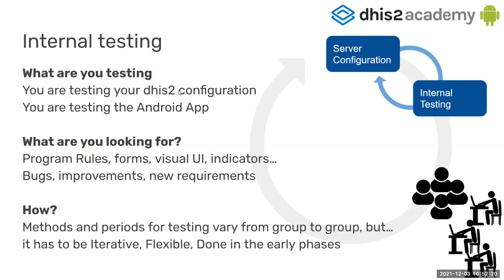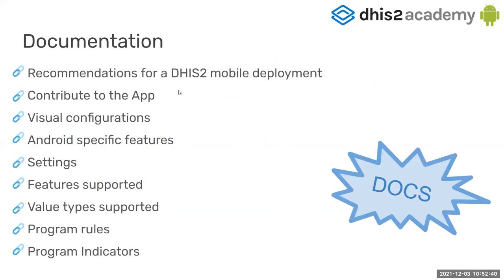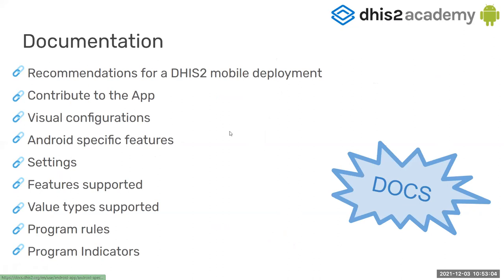You could think of improvements or new requirements. The methods and timings vary from group to group, but the common thing is that it has to be iterative — very fast cycles — and it has to be done at the very beginning. Documentation is your best friend for this phase. The links on this slide point to documents covering what is supported, what is not, and how to configure everything discussed in this academy. Make sure to go back and use the documentation.